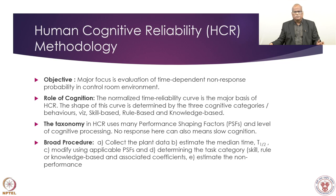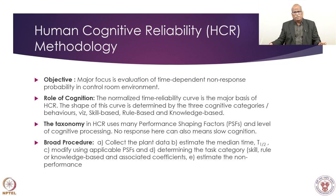The best way to understand HCR is by its objective. The major focus is: what is the time available to us, and how much time the task will actually take — because it has both an action part and a cognitive part. If the time available is large compared to the time required for the task to be completed, then the chances of errors are less. When we have very limited time, we hurry up, we are stressed, and we make more errors. The objective here is more on the cognitive component of risk.